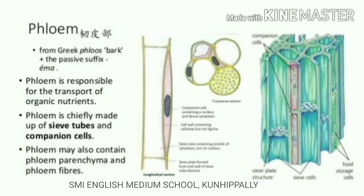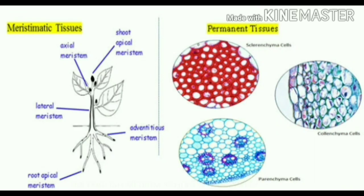I hope all of you understood about plant tissues. Plant tissues are of two types: meristematic tissues and permanent tissues. Thank you, and have a nice day.